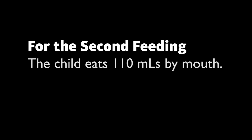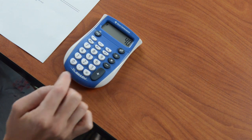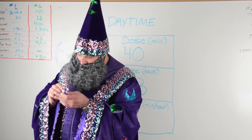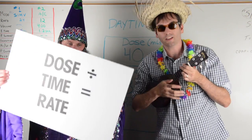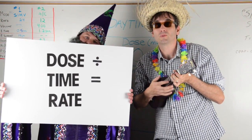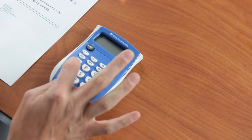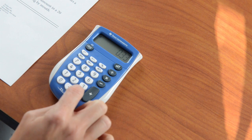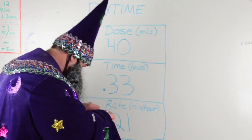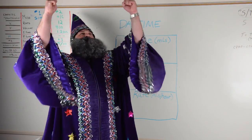For the second daytime feeding, the child eats 110 milliliters by mouth. The missing amount is 150 minus 110 equals 40 milliliters through the feeding tube. Dose divided by time equals rate: 40 milliliters divided by 0.33 hours equals 121.21 milliliters per hour, which rounds to 121 milliliters per hour. For the third daytime feeding, the child eats 150 milliliters by mouth. Since the child ate all the formula, you do not need to give a bolus feeding.